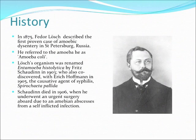A little bit about the history. The first case of dysentery was described in Russian by Fedor Losh in 1875. He saw the organism and initially called it amoeba coli. The organism was renamed in 1903 by Schaudinn, a German zoologist who also described the agent of syphilis. He died in 1906, three years after changing the name of the organism, because of an amoebic abscess — supposedly from a self-inflicted infection. As an ID fellow, I'm glad we don't do that anymore.